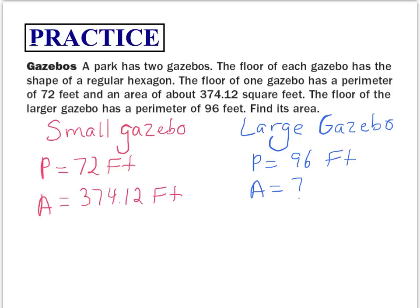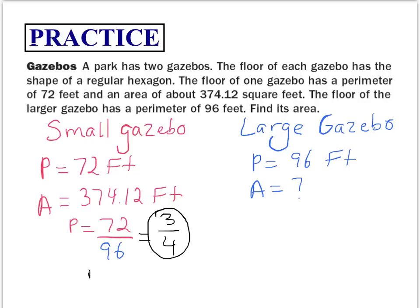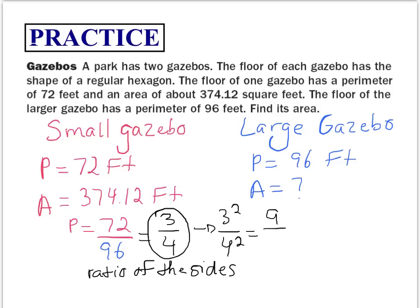The ratio of the perimeters is the same as the ratio of the corresponding sides. The ratio of the perimeters is 72 over 96. Simplified, that gives us 3 over 4, which is technically the same as the ratio of the sides. To find the ratio of the areas, we square these: 3 squared over 4 squared. This gives us a ratio of 9 over 16 for the small gazebo to the larger gazebo.